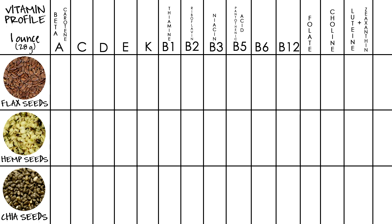For the vitamin profile, all measurements are based on 1 ounce (28 grams) of each seed. For vitamin A in the form of beta-carotene: flax seeds have zero, hemp seeds 3.1 mg, and chia seeds 12.3 mg. For vitamin C: flax seeds 0.2 mg, hemp seeds 0.1 mg, chia seeds 0.4 mg. There is zero vitamin D for all seeds. For vitamin E: flax seeds 0.1 mg, hemp seeds 0.2 mg, and chia seeds 0.1 mg.